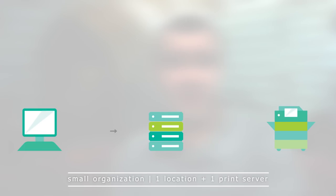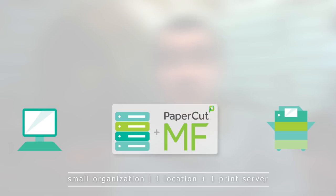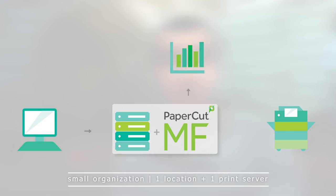So let's start with a simple scenario. You're a relatively small company that's running a print server — that's where all your users are doing their printing from. With PaperCut MF you can actually install the application server on top of this print server. Immediately after installing it, we start capturing those print jobs, and that information is immediately available for reporting. You can also restrict users in what they can and can't do.